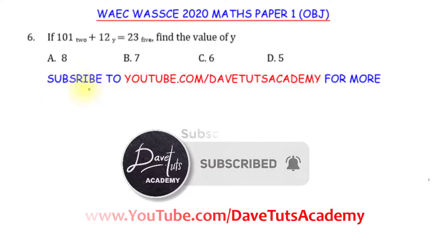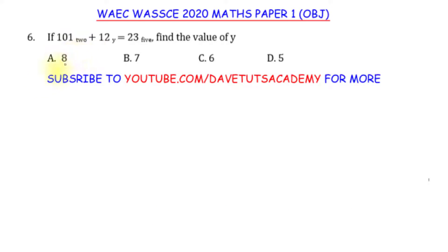Now the rule of thumb for us to follow here is that we should just convert everything to base 10. Let's flatten out this expression and then we will be able to solve for y as requested. And to flatten it out, to convert to base 10, we need to take 101 to base 2, convert it to base 10, 12 to base y, convert it to base 10.